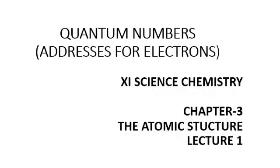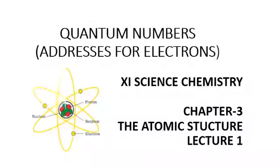Dear students, today I am going to discuss with you the topic of quantum numbers. Quantum numbers basically provide information about the addresses for the electrons. We know that an electron lives in an atom. An atom is the house of an electron. If atom is the house of an electron, then where will we find the electron? That is why I have chosen the subheading 'addresses for the electrons'.